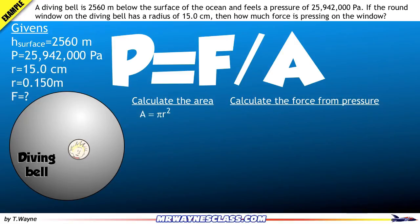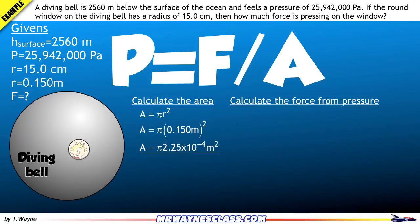To calculate the area, it's a round window, so that's going to be pi r squared. The area is pi times 0.150 meters, squared. So the area is pi times 2.25 times 10 to the negative 4 meters squared. I'm leaving the pi symbol in there because later I'm going to use the pi symbol on my calculator to do the calculations.